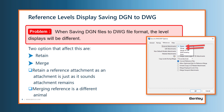Our second scenario will be saving a DGN file that merges our reference file. As I mentioned, this can be more problematic — for example, saving a DGN with a reference attached and external nested attachments that change when the files are all merged together.